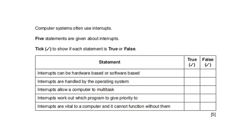Computer systems often use interrupts. Five statements are given — tick true or false. Interrupts can be hardware based or software based — true. Interrupts are handled by the operating system — true. Interrupts allow computers to multitask — true. Interrupts work out which program to give priority — false. Interrupts are vital to computers and they cannot function without them — true.